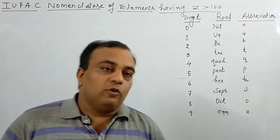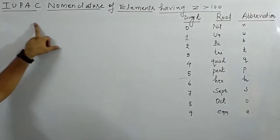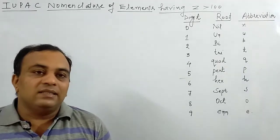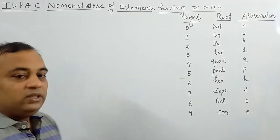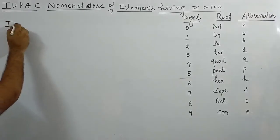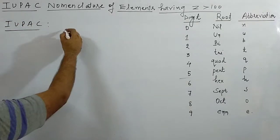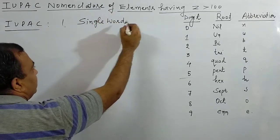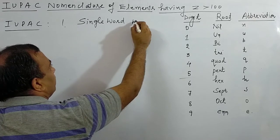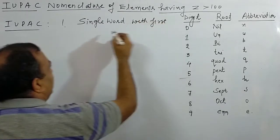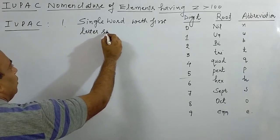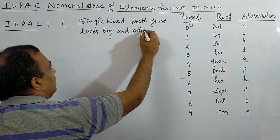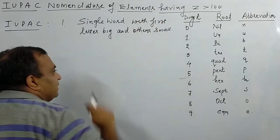Students, today we'll discuss the topic of IUPAC nomenclature of elements having atomic number more than 100. For elements whose atomic number is more than hundred, we need to do their IUPAC naming. The IUPAC name is written as a single word with the first letter capital and the rest small.